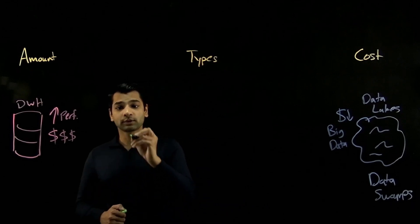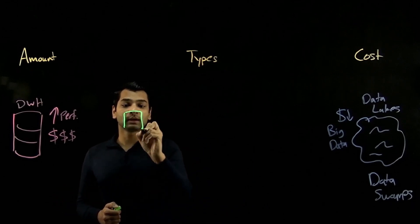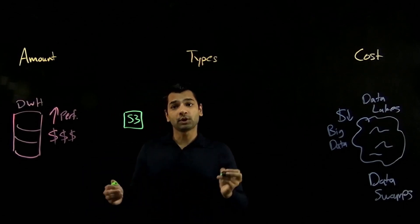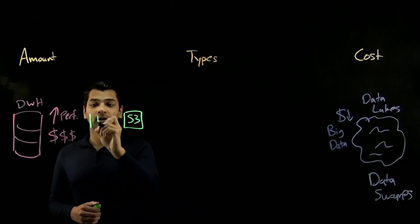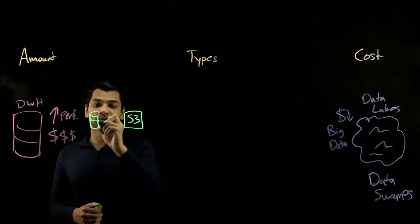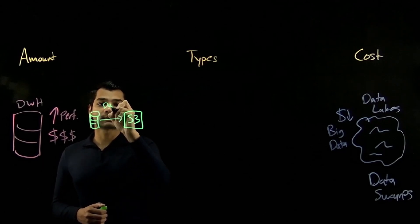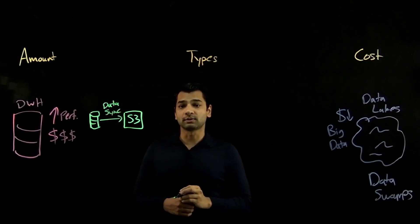We start with your data, wherever it resides, including in your Amazon S3 data stores. And if you have data coming from other on-premises systems, well, we can use AWS services like DataSync to land them into our S3 store.